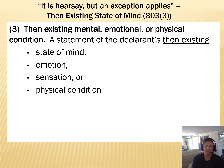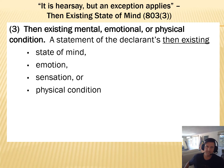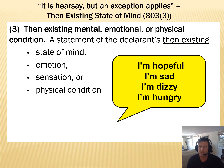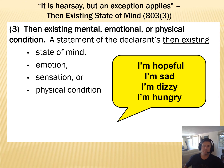This is the part of the rule that makes it easy: then existing mental, emotional, or physical condition. If you think about a declarant that we're probably not meeting at trial — it's going to come through a witness — they're going to say something like, 'Porter said...' What did Porter say out of court? Statements like 'I'm hopeful' — that's my state of mind. 'I'm sad' — that's my emotion. 'I'm dizzy' — that's my sensation. 'I'm hungry' — that's my physical condition. Anything communicating what's going on with me in real time. It has some of the same underlying policy as 803.1 present sense impression, because there's no opportunity for reflection — I'm not thinking back on how I felt yesterday. I'm talking right now, real time: what is my then existing condition?